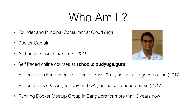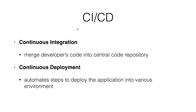Today we are going to learn about CI-CD with Docker. In a very few words, in continuous integration we merge a developer's code into a central code repository. And with continuous deployment, we automate the steps to deploy the application into various environments, be it QA, staging, or production.